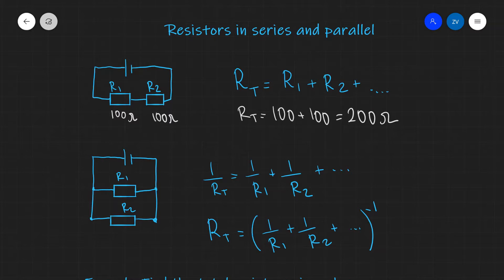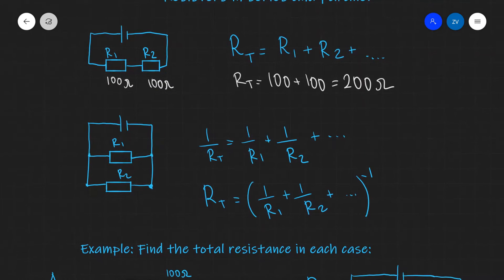On the other hand, if those two resistors were connected in parallel, the total resistance will be given by the following expression. 1 over R_T will be equal to 1 over R1 plus 1 over R2 plus more if there are more than two resistors connected in parallel.